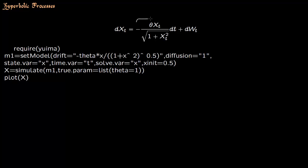This is your drift part and your diffusion is just 1. The drift part is minus theta times x divided by square root of 1 plus x squared, and diffusion is 1.